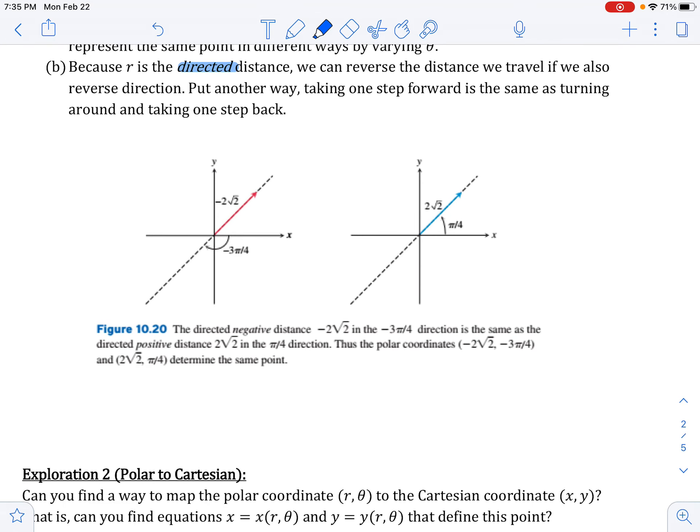Put another way, I kind of like this terminology. It says, put another way, taking one step forward is the same as turning around and stepping one step backward. And if you look here at this example, if you say your angle is negative three pi over four, but your radius is negative two radical two, or if you say your angle is pi over four and your radius is two radical two, you'll end up at the same spot and same location. And so they have the same point.